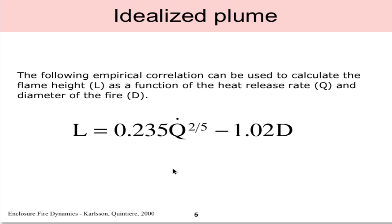This equation from the textbook shows L, the physical flame height, as a function of Q, the total heat release rate, and D, the diameter of the fire. Notice the units on this: Q is in kilowatts and D is the diameter of the fire in meters or the equivalent diameter in meters.